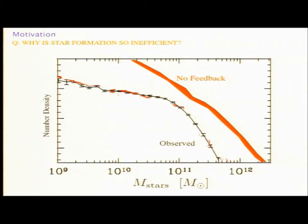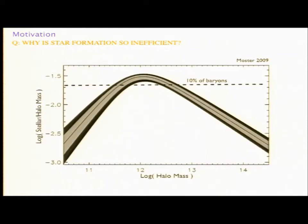I don't need to really give the introduction. We know we need feedback to explain the mass function of galaxies or this plot that keeps coming up, the reason why star formation is so inefficient at low masses. And we think that at low masses that's stellar feedback. I won't be talking at all about AGN feedback at high masses.